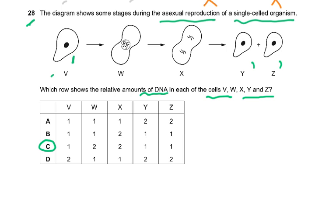The DNA doubles because it replicates, so this one cell has an amount of 2. Then two cells form and they each have 1 — so the cells go from 1 to 2 back to 1, 1.